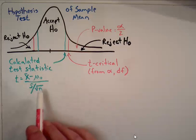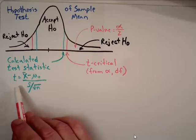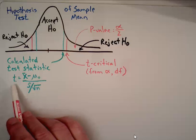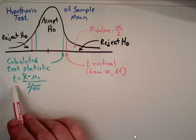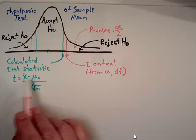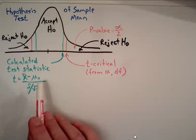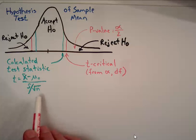Then what we do is we calculate a test statistic from our sample data, and our test statistic, our calculated test statistic, is equal to the mean, the sample mean, divided by the hypothesized mean, and then divided by the standard deviation divided by the square root of n. And then we can compare the two.